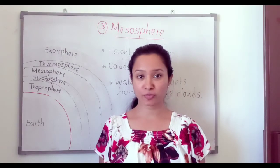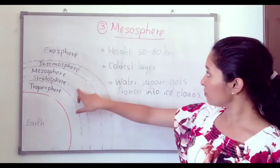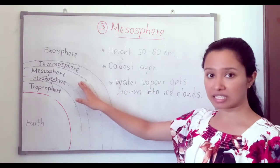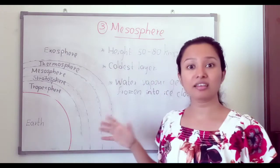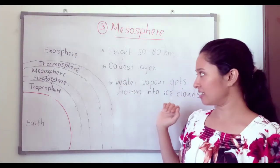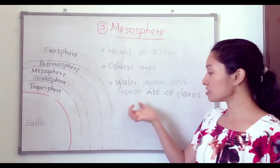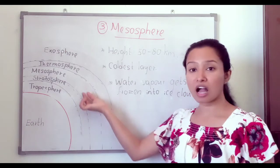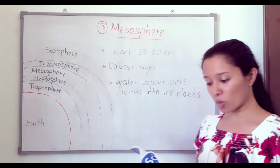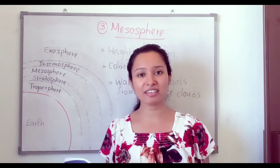The third layer of the atmosphere is the mesosphere. This layer spreads from 50 to 80 kilometers from the sea level. The mesosphere is the coldest layer among the five layers. Here, water vapor gets frozen into ice clouds. When the sun sets, the rays fall on these clouds and you can see them during the night time.